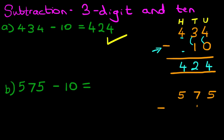575 minus 10. Let's label the columns as well. We've got units, tens, and hundreds.